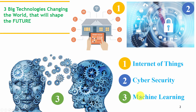The third one is Machine Learning. Because of new computing technologies, machine learning today is not like machine learning of the past. It was born from pattern recognition and the theory that computers can learn without being programmed to perform specific tasks. Researchers interested in artificial intelligence wanted to see if computers could learn from data. The iterative aspect of machine learning is important because as models are exposed to new data, they are able to independently adapt — learning from previous computations to produce reliable, reputable decisions and results. It is a science that's not new but one that's gaining fresh momentum.